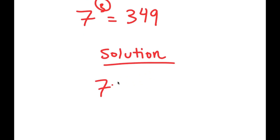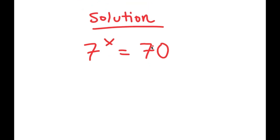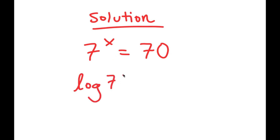So now to actually solve for x, my equation is 7 to the power of x is equal to 70. What I'm first going to do — and what I recommend for any exponential equation like this — is taking the log on both sides.